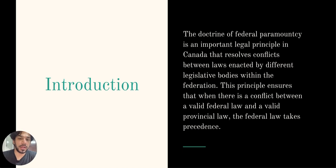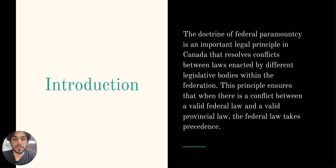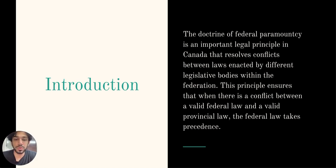The doctrine of federal paramountcy in Canada is used to resolve conflicts between federal and provincial laws. One of the main problems with these conflicts is inconsistency between laws enacted by different legislative bodies within the Federation. In Canada, the doctrine of implied repeal is used to reconcile conflicts between inconsistent laws enacted by the same legislative body. However, when it comes to federal and provincial laws, neither the federal parliament nor a provincial legislature has the power to repeal others' laws. To address this issue, the courts have adopted the doctrine of federal paramountcy, which states that when there are conflicting federal and provincial laws, the federal law takes precedence.